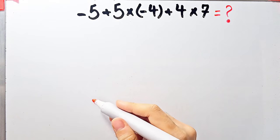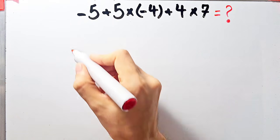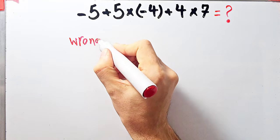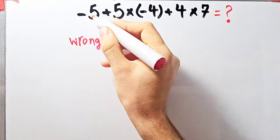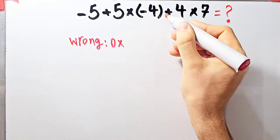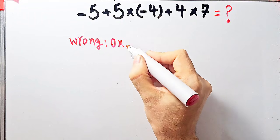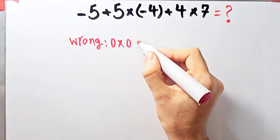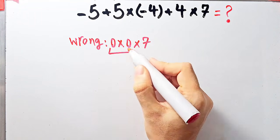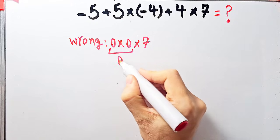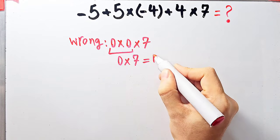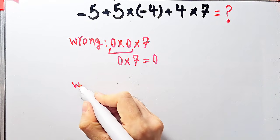Some people solve this question by starting from the left without paying attention to the priority of mathematical operations. They say: negative 5 plus 5 equals 0, 0 times negative 4 plus 4 equals 0, then times 7 — 0 times 0 equals 0, and 0 times 7 equals 0.